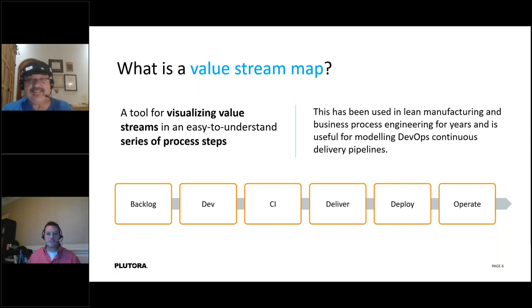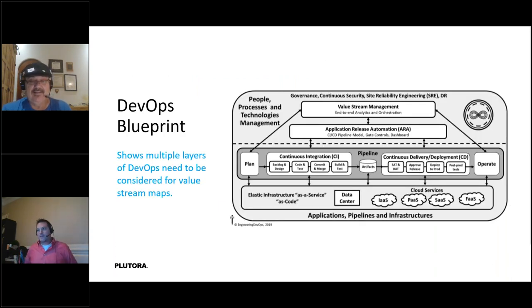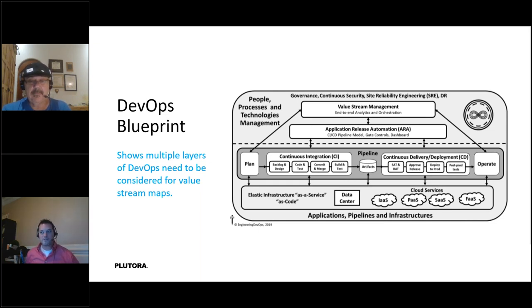I actually find value stream mapping workshops fun. Everybody seems to like them by the time they're done, even though they come into it wishing they didn't have to go to that meeting. Because the first thought is it's just a waste of time — 'I've got to get stuff done.' So how does doing this mapping fit into a DevOps transformation?